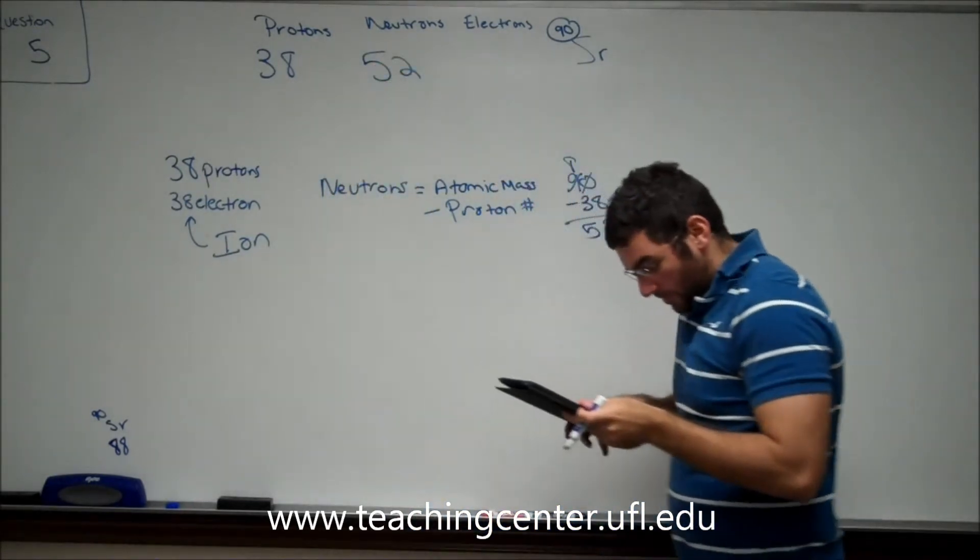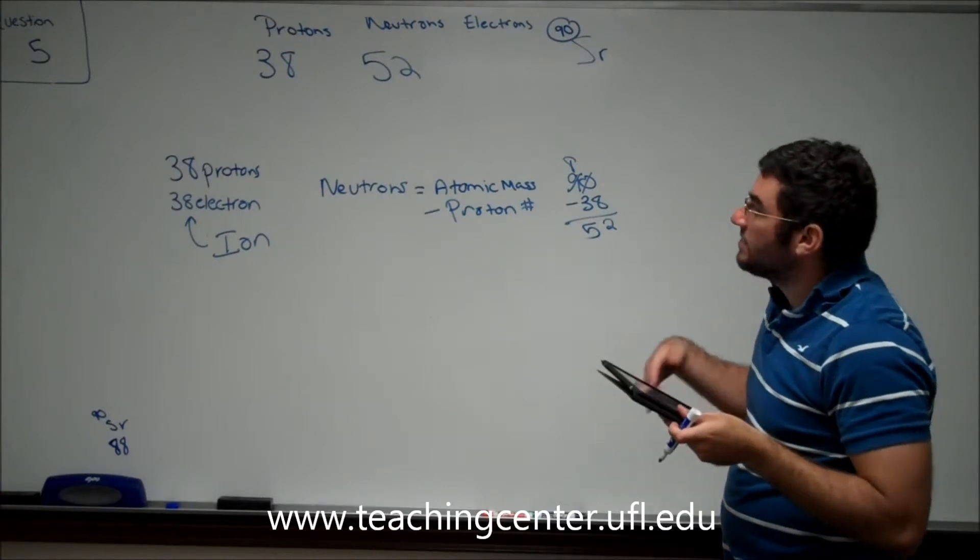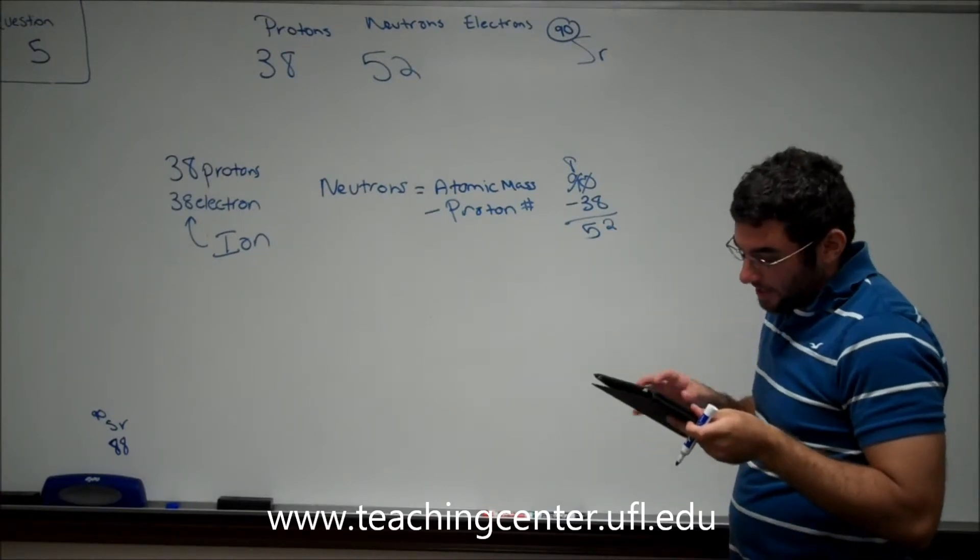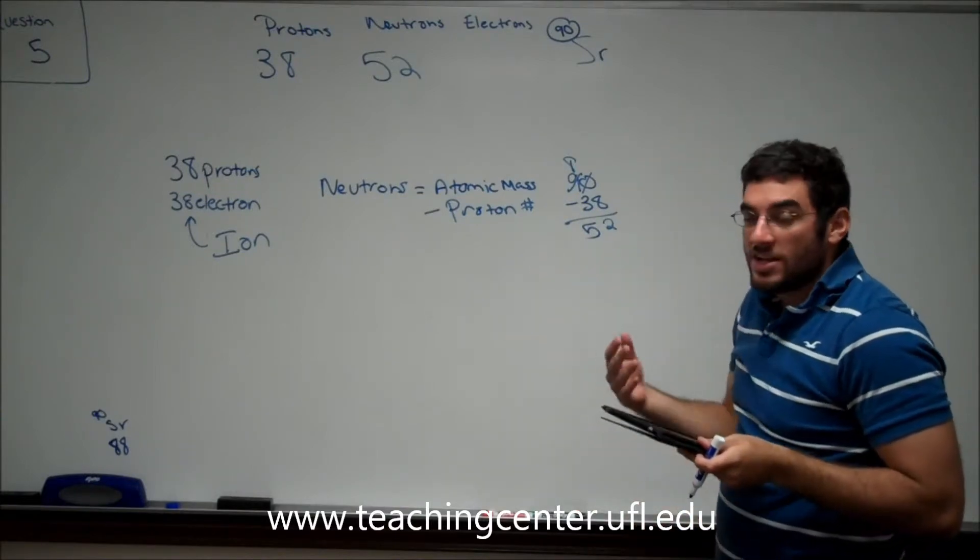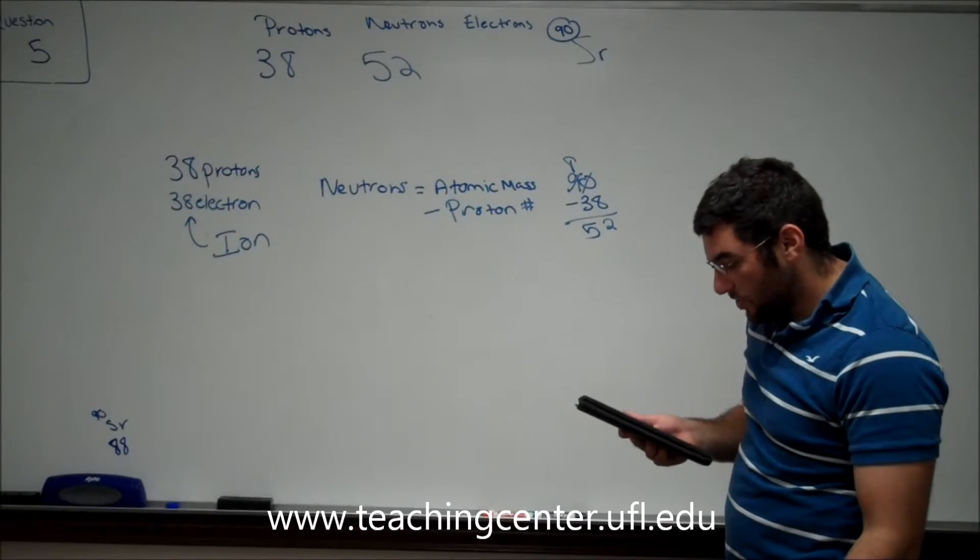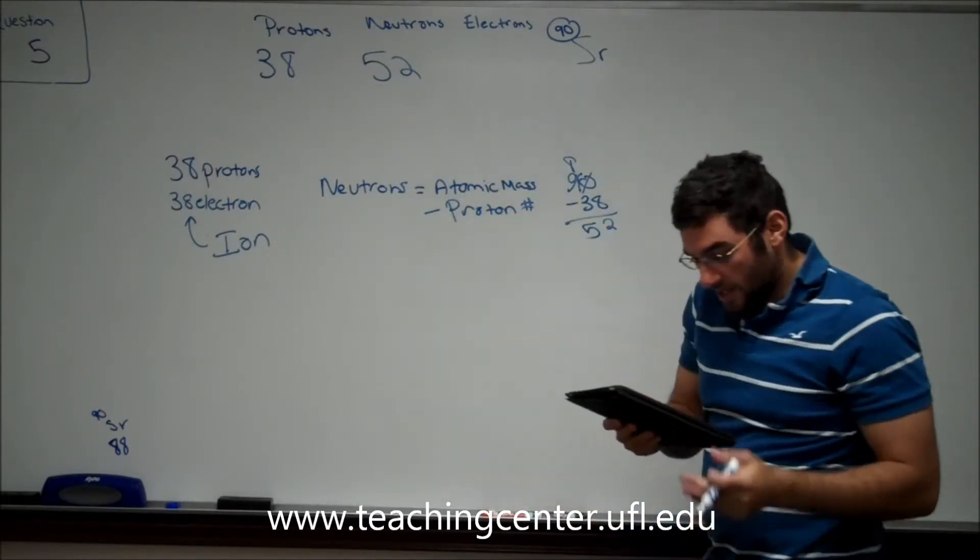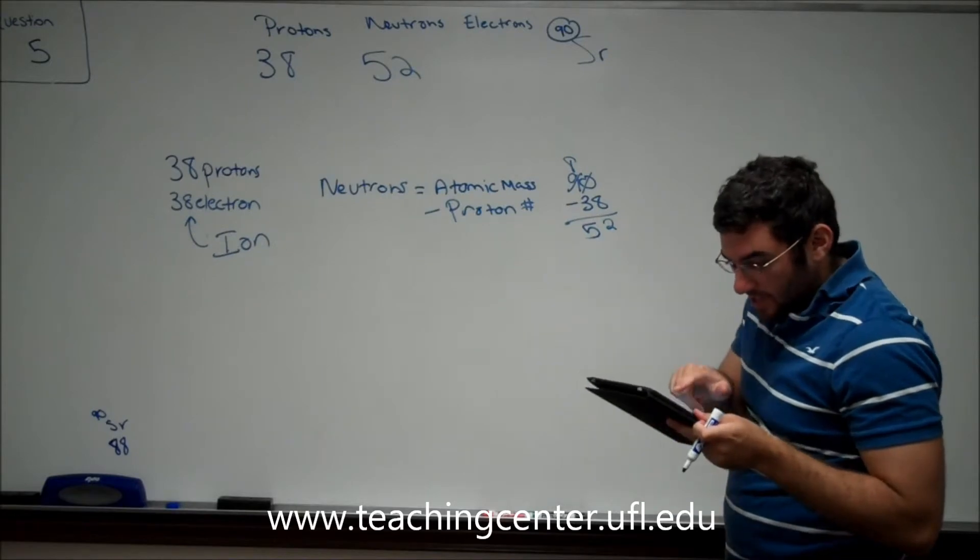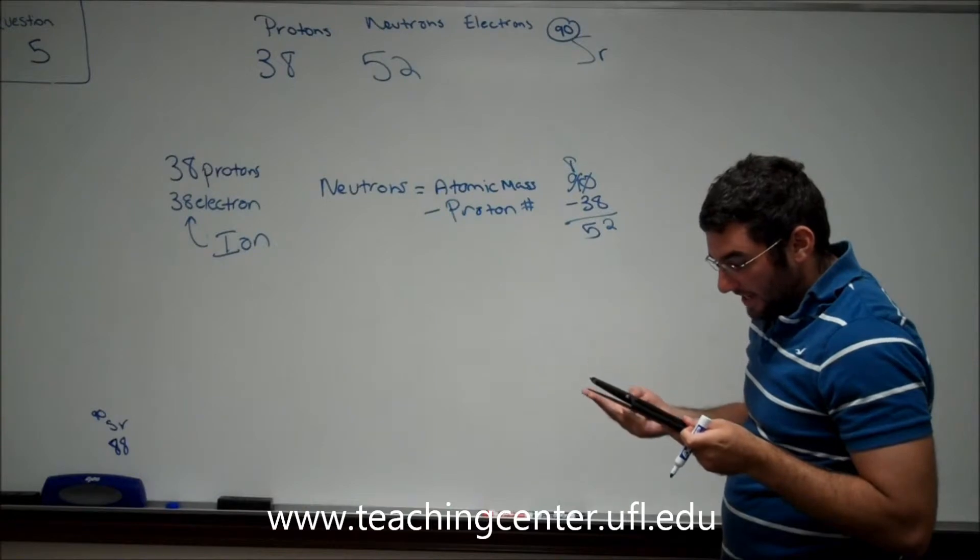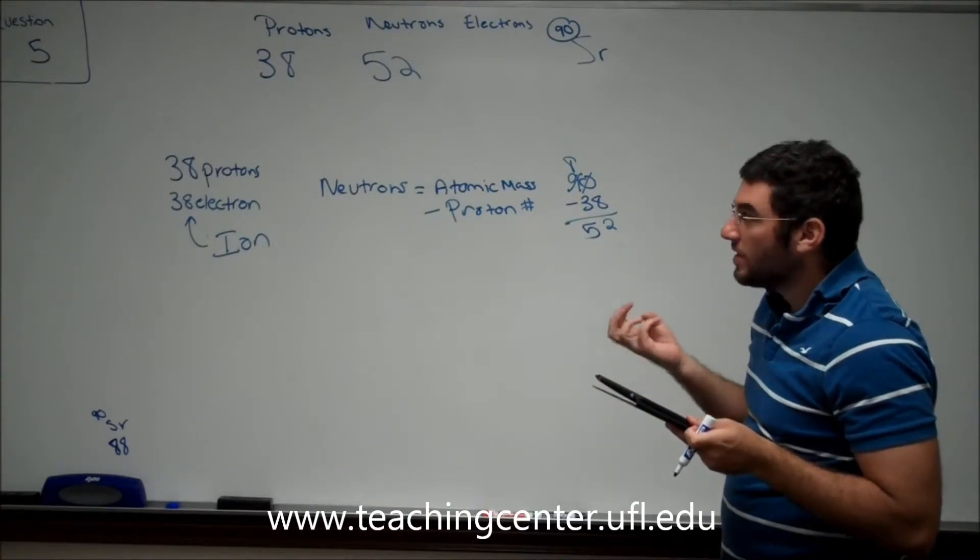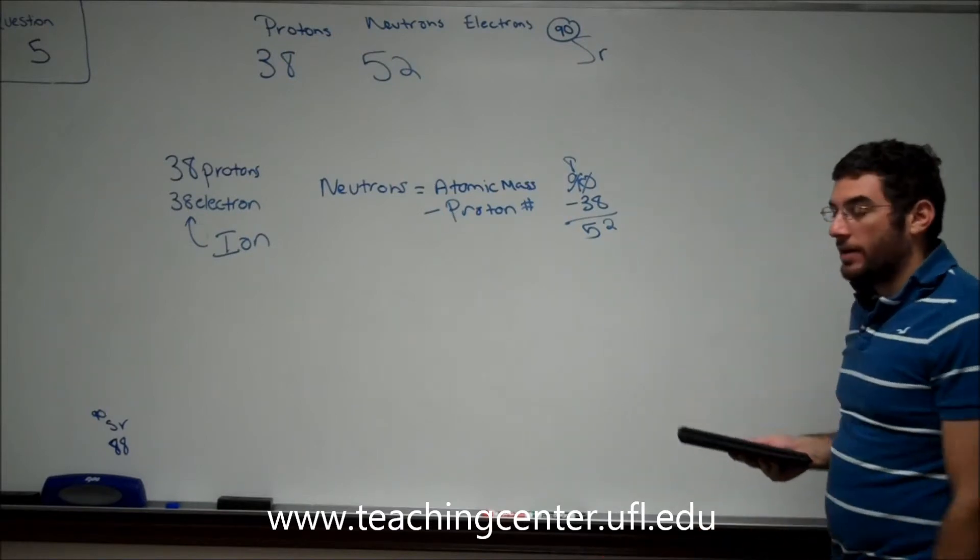If we look at our answer choices, right away, we can see that the professor knows you can go to the periodic table, because every single answer choice begins with 38 protons. So what he really wants to challenge you on is how you can differentiate between the neutrons and the electrons. We already found our neutrons, so we can eliminate answer choices one and two. Now we have one out of three if we didn't know how to find the electrons.